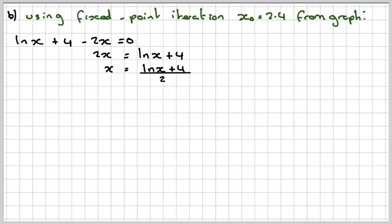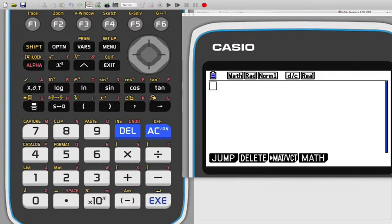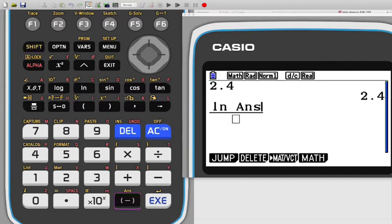So if we now go to our calculator, we put in 2.4 first. So you put in x0 first, and then just press the equals button. And then we set this up as ln, so a fraction button, ln of the answer plus 4.